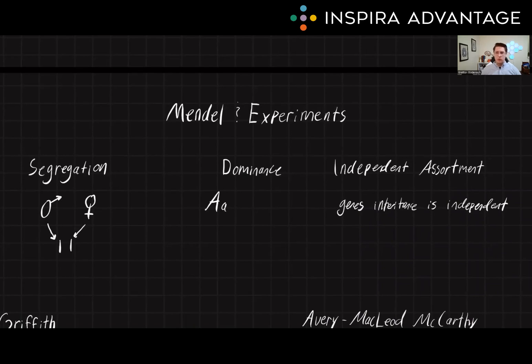Gregor Mendel was an Austrian monk who lived in the 19th century and is considered the father of genetics. He conducted extensive experiments on pea plants and discovered the basic principles of inheritance that are now known as Mendel's Laws.